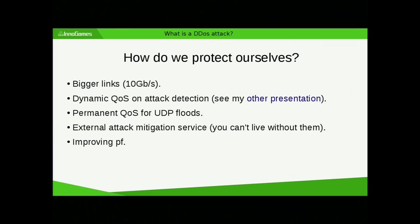How do we protect ourselves? There are multiple ways. You want to increase the capacity of your network — 10 gig is what we have now. Dynamic quality of service on attack detection — I have another presentation on this elsewhere. Permanent QoS is possible since we have no UDP-based services, so we can limit this traffic immediately without dynamic configuration. External attack mitigation services exist — companies that do it for you. The setup we use is a tunnel to them; we advertise each /24 we have, they advertise us through the internet and do the traffic scrubbing.